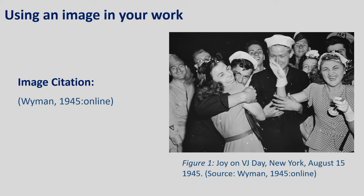For most sources, the citation within the body of your work is the author's surname, comma, and the year of publication, or the organisation name, comma, and the year of publication in round brackets. As this image is an exact reproduction of an image found online, you will also need to include the word 'online' in place of a page number within your citation.